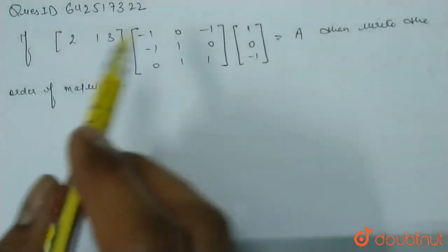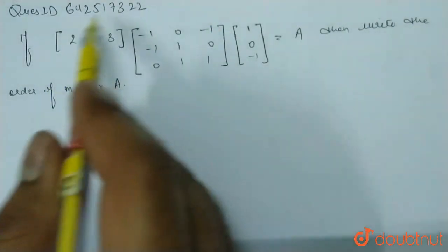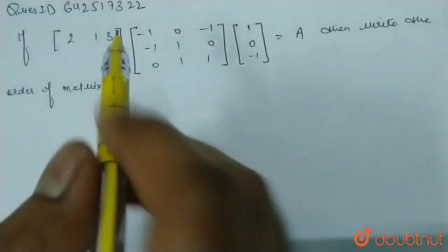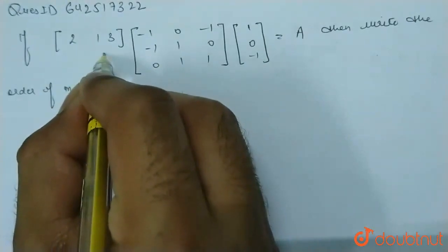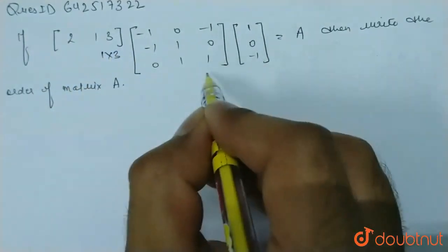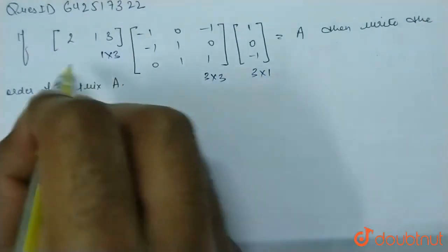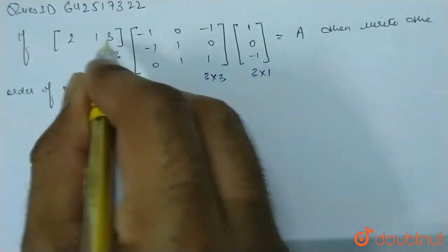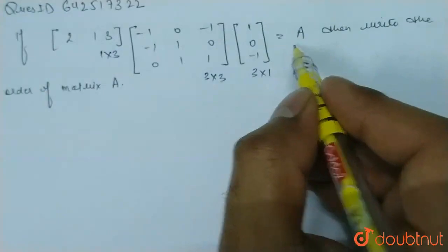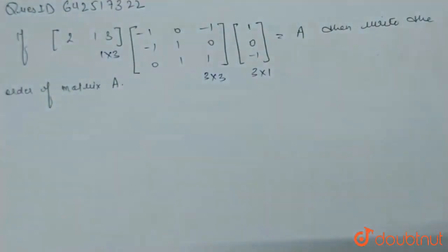Question is given if the matrix multiplication of these matrices is equals to A. This is a 1 cross 3 matrix, this is a 3 cross 3 matrix and this is a 3 cross 1 matrix. Then, the matrix multiplication of these matrices is equals to A. Then, write the order of matrix A.